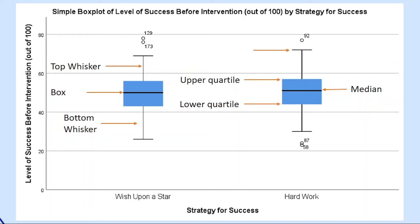The topmost area of the top whisker represents the highest value in a data set, while the lower area of the bottom whisker represents the lowest value. A box plot is a very important tool to identify outliers in your data. Outliers are represented as circles in SPSS, with the number of the row in which they are found.